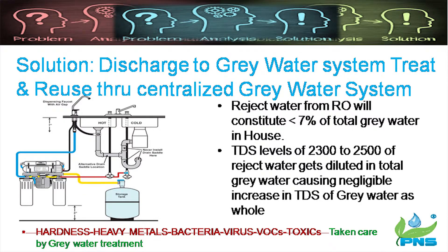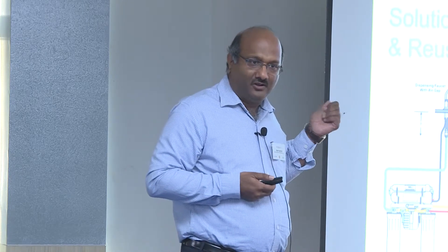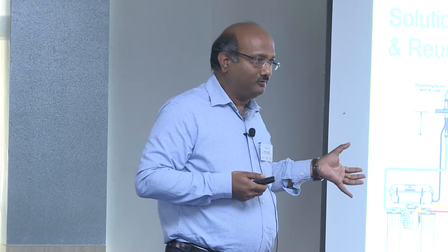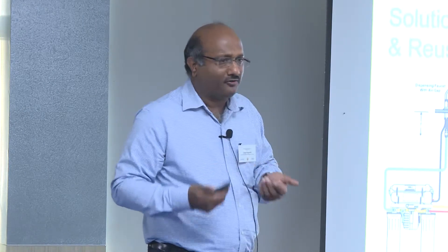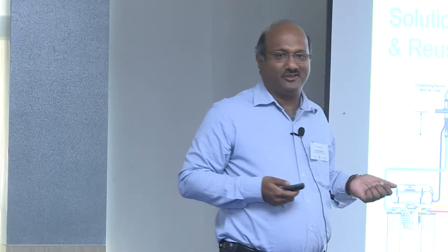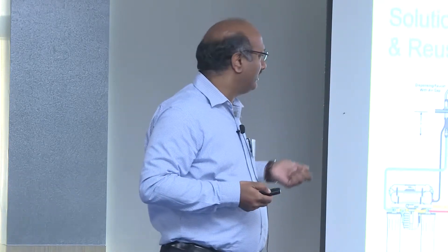What we propose is this: since gray water segregation is increasingly happening, the reject water from the RO can be mixed with the gray water stream. The TDS of 2300 to 2500 in the reject water gets diluted to a negligible increase in the gray water TDS. Hardness, heavy metals, bacteria, viruses, and toxics can all be addressed by the gray water treatment process. We need not worry about RO reject water — the debate that RO wastes a lot of water can be resolved this way.